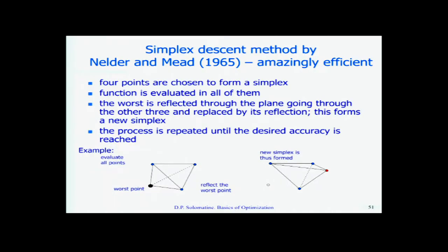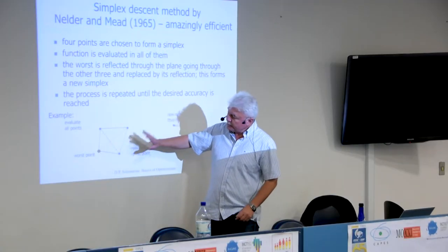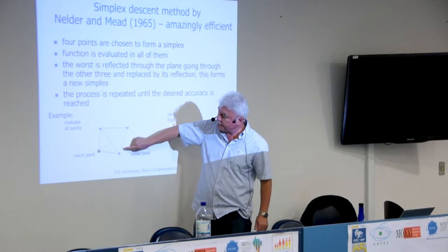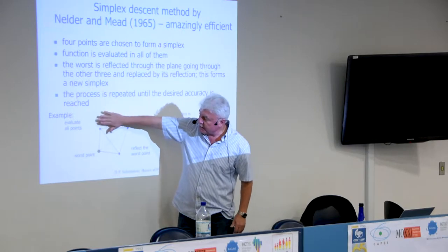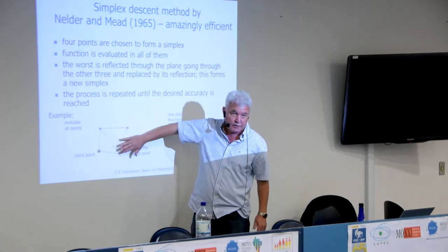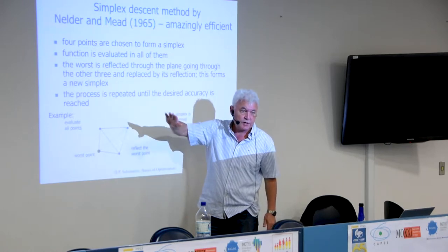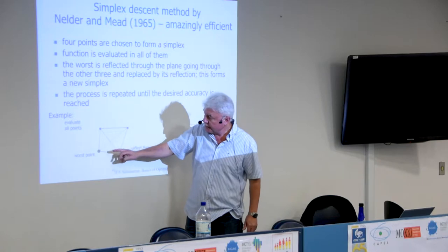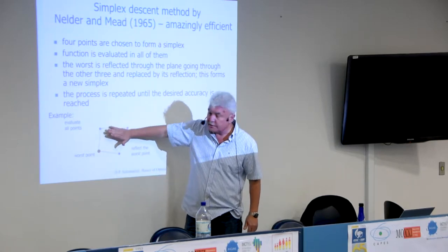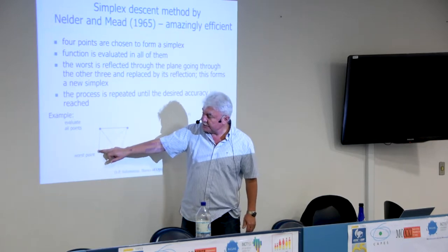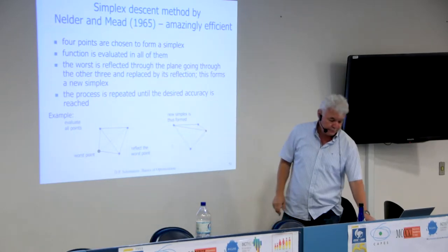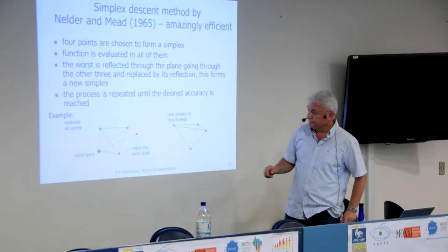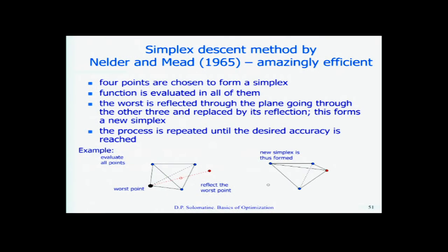We take the worst point and reflect it through the hyperplane formed by the three other points. There are four points total: one is worst, three are okay. The equation of the plane through three points is straightforward. We calculate the distance of the worst point from that plane and project it the same distance to the other side, creating a new point.